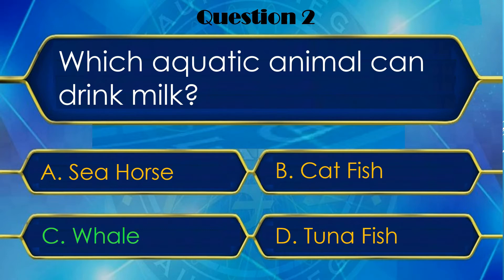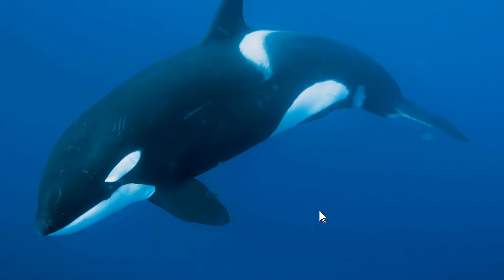Okay, let me check. Yes, whale is the correct answer. Friends, in 4 options mein, Seahorse, Catfish and Tuna fish — yeh sab fish category mein aate hain. Aur jo whale hai, woh fish category mein nahi aata, woh ek mammal hai. Toh mammals ka yeh primary characteristic hota hai ki woh milk ko produce bhi karte hain aur unke babies milk ko consume bhi karte hain. Aisi bahut saari other mammals hain jo aquatic animals hain — for example, dolphin, manatees, and many others.